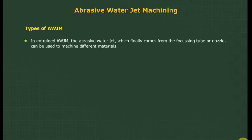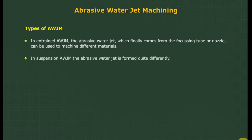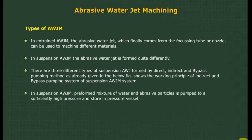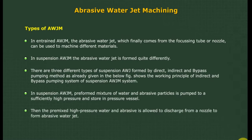Types of AWJM: in entrained AWJM, the abrasive water jet from the focusing tube or nozzle is used to machine different materials. In suspension AWJM, the abrasive water jet is formed quite differently — there are three different types of suspension AWJ formed by direct, indirect, and bypass pumping methods. In suspension AWJM, a preformed mixture of water and abrasive particles is pumped to a sufficiently high pressure, stored in a pressure vessel, and then the pre-mixed high-pressure water and abrasive is allowed to discharge from a nozzle to form the abrasive water jet.